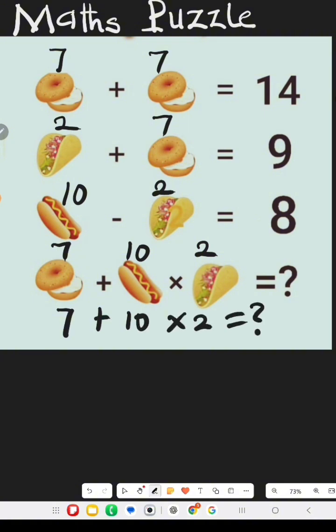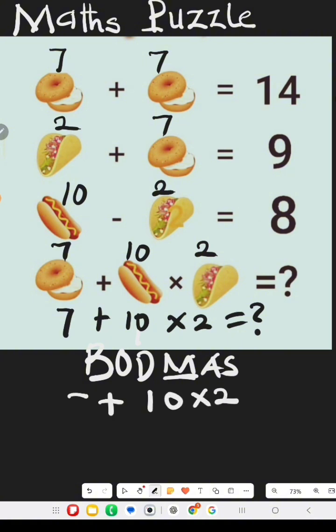What we do, we use BODMAS. Now we first consider multiplication, that is 10 times 2, plus 7 equals what? We consider this 2, which gives us 20 plus 7, which equals 27 as the answer.